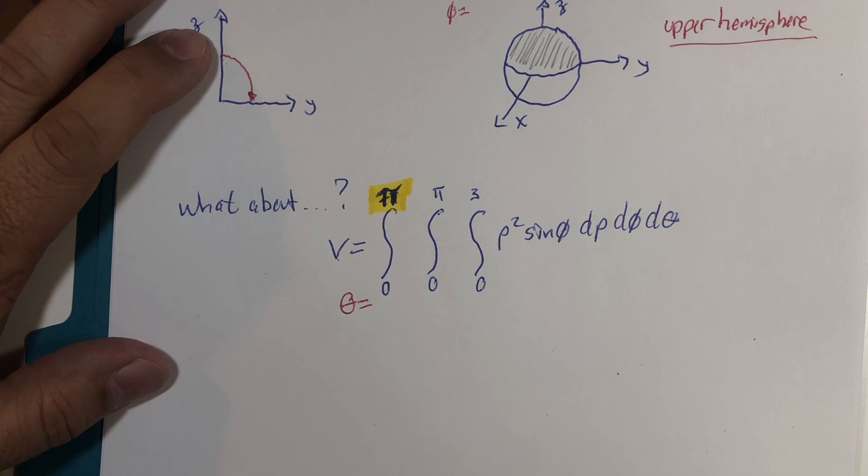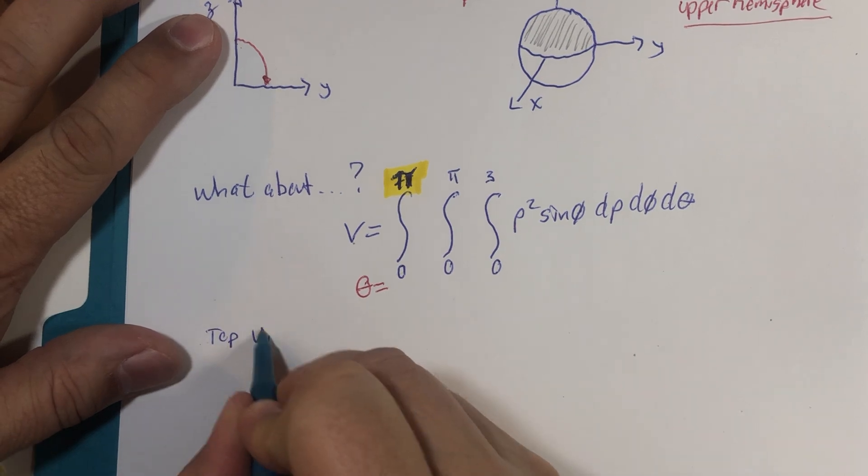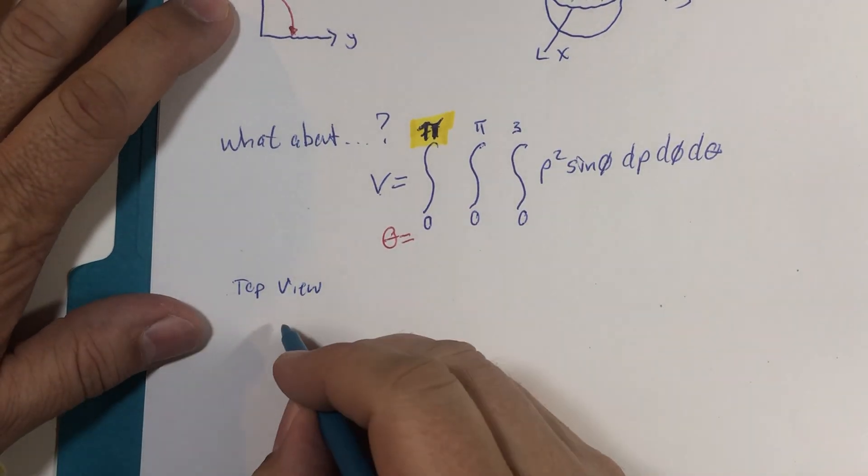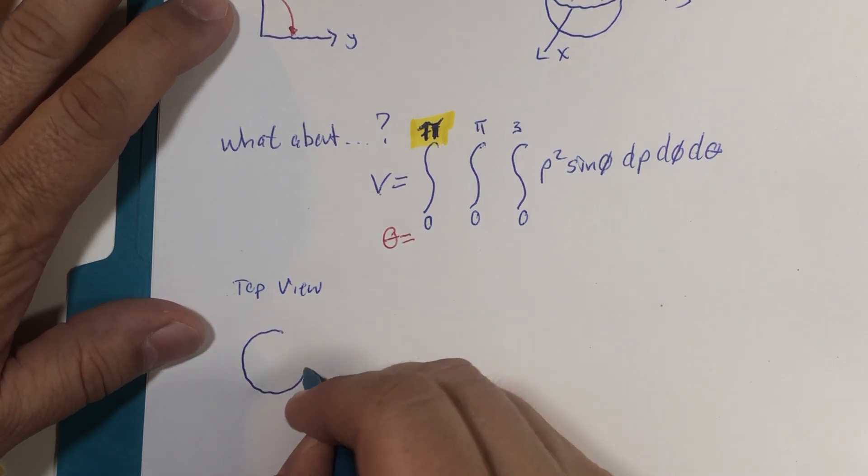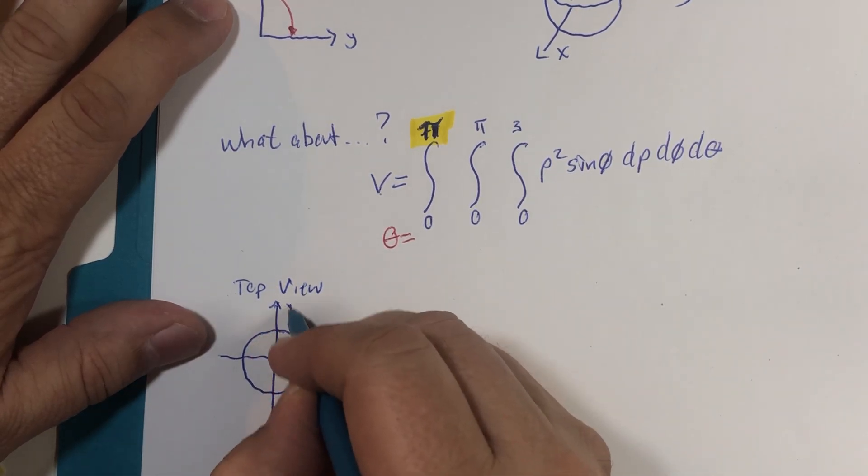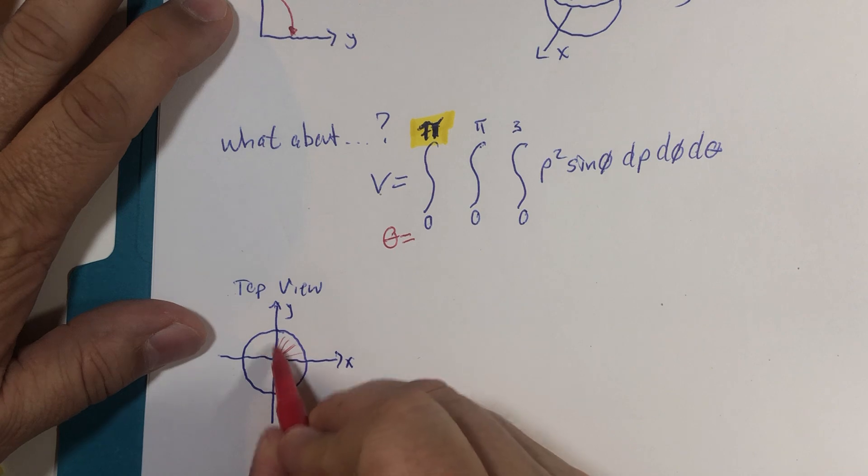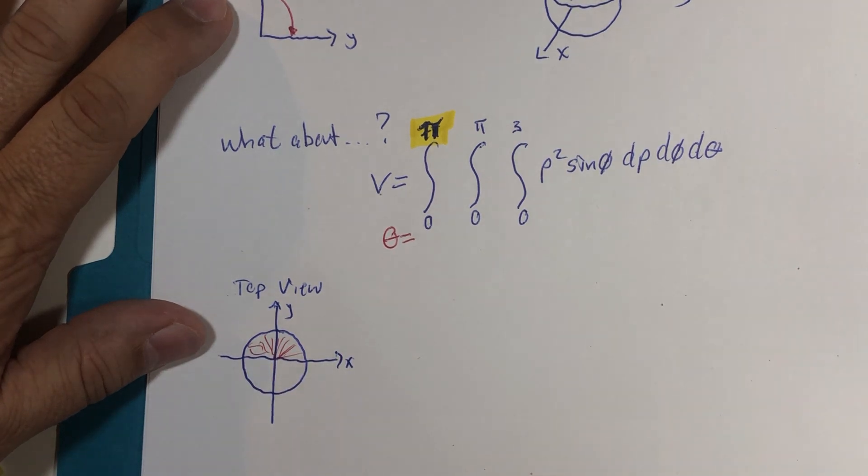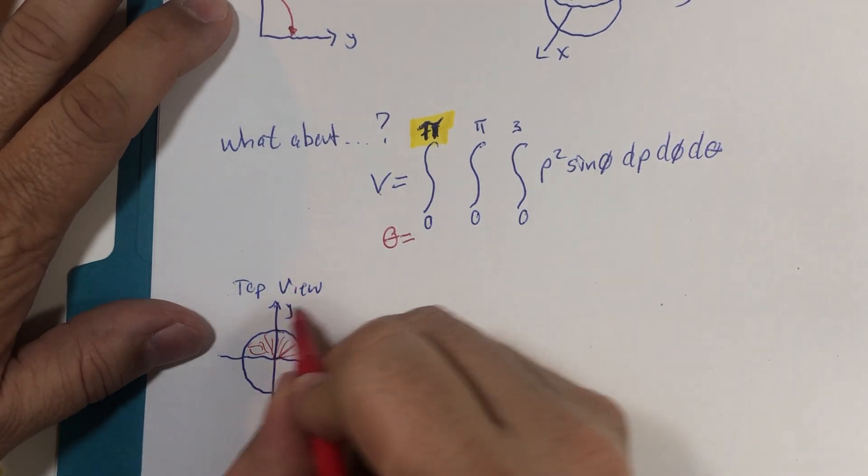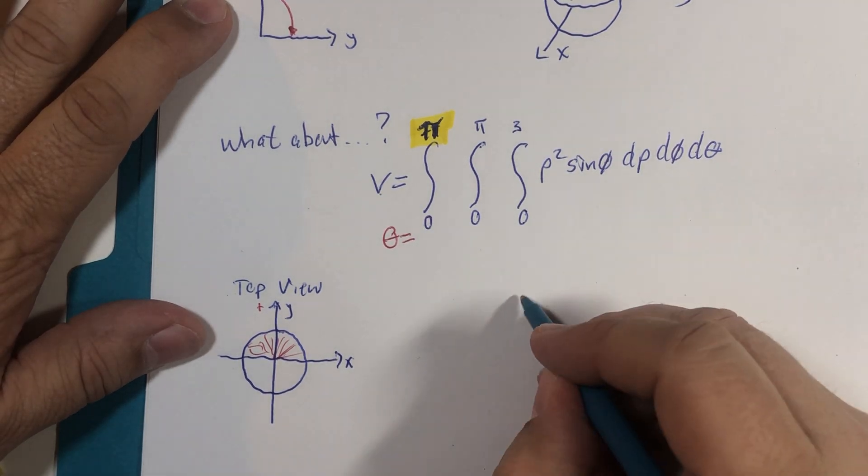Well, as I indicated, for theta we look at the top view, which was a circle. X-axis, y-axis, and we would be looking at this portion of the circle. In two dimensions we would call this the top half of the circle, but we're going in the direction of the positive y-axis for the sphere.